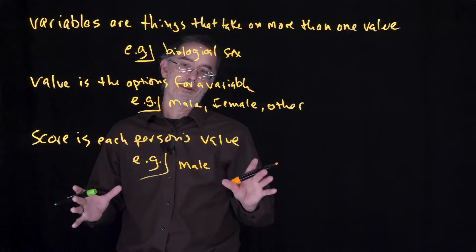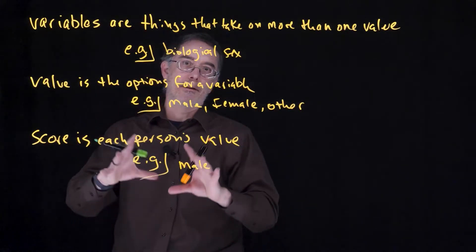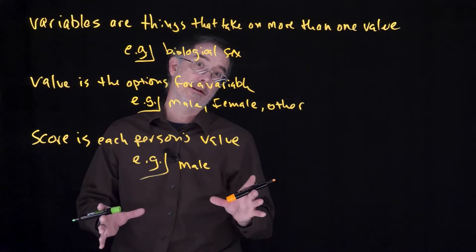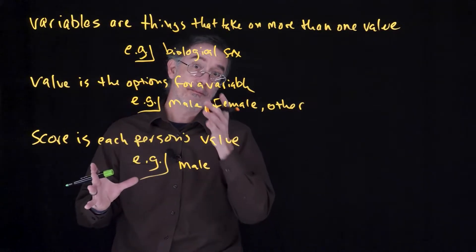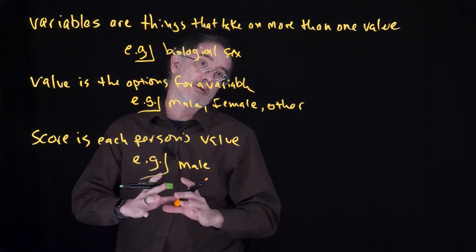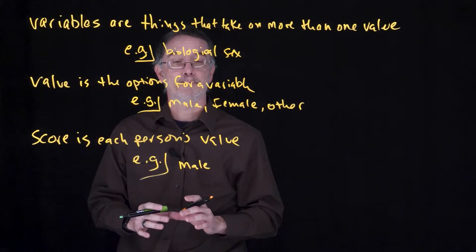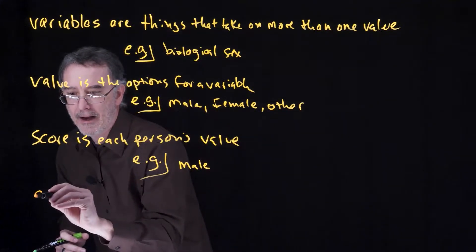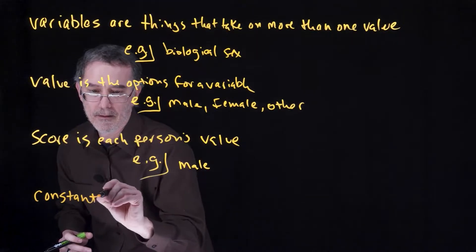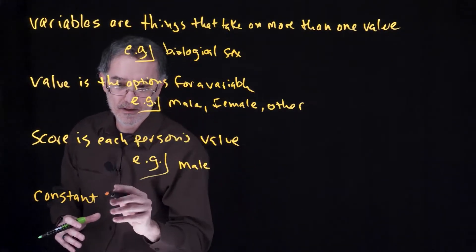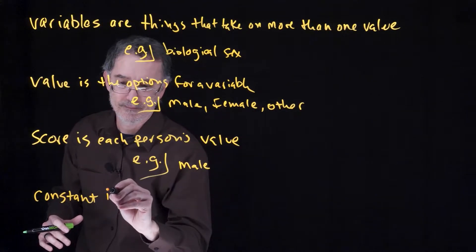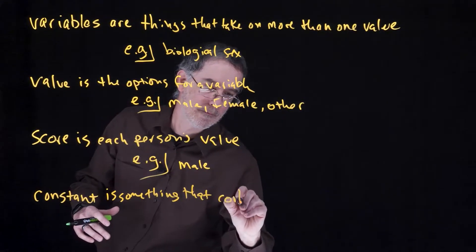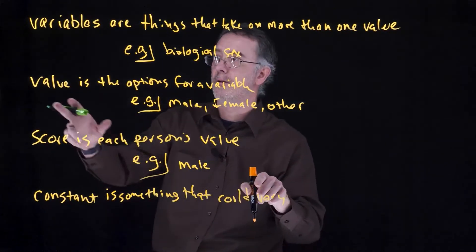Sometimes when you are doing research with your data set, with your study, you decide to only include certain kinds of people to simplify the data analysis or the kinds of conclusions that you can draw. Sometimes something that could be a variable becomes a constant. A constant is something that could vary in a data set, but doesn't. It could take on multiple values.